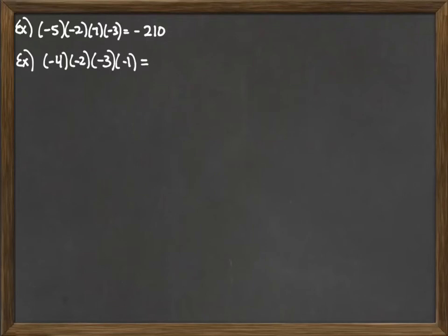Let's consider another example here: negative 4 times negative 2 times negative 3 times negative 1. We have 4 negatives involved so that's an even number, so we're going to have a positive answer. Then we just do the multiplication: 4 times 2 times 3, and that will give us 24 as our answer.